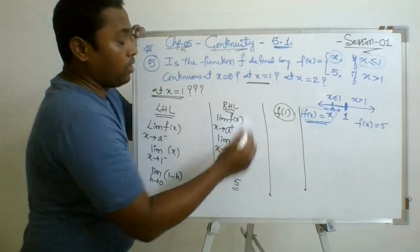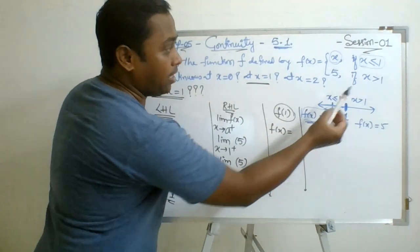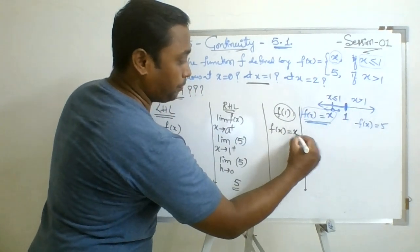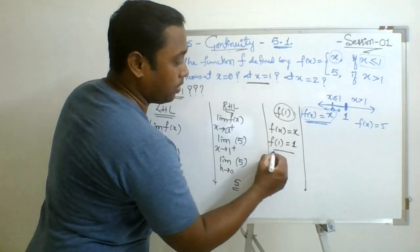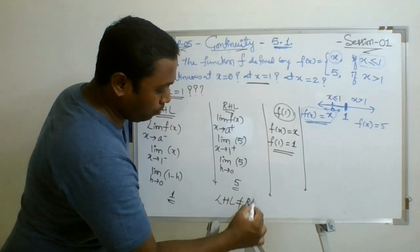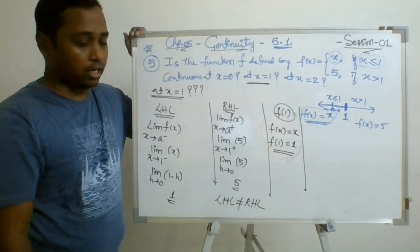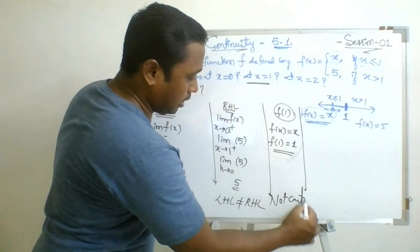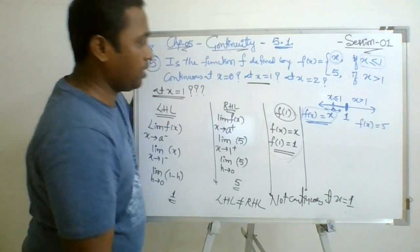Now to find f(1): we need to check which function applies exactly at x equal to 1. Since x equal to 1 satisfies the condition x less than or equal to 1, f(1) = 1. If you observe, the left hand limit is 1 but the right hand limit is 5 — LHL is not equal to RHL. So there is no need to check the value of the function; just for satisfaction we can confirm. The graph is not continuous at x equal to 1.